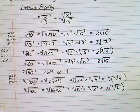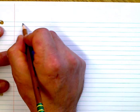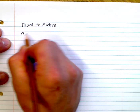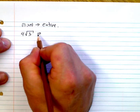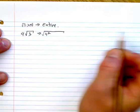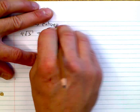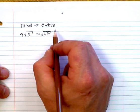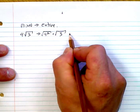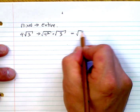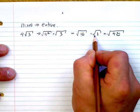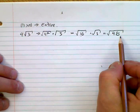Let's practice converting mixed radicals back to entire radicals. Take 4 root 3 (square root). We square the 4: 4 squared is 16, so we have the square root of 16 times the square root of 3, which combines to the square root of 48.